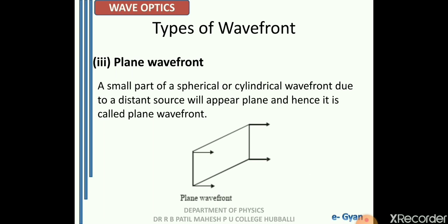The type of wave front depends purely on the type of source chosen. If we choose a point source or a pinhole, it gives us a spherical wave front. If we choose a linear source or a slit, we get a cylindrical wave front. Whether spherical or cylindrical, if the point of observation is too far from the actual source, the wave front appears as a plane wave front.